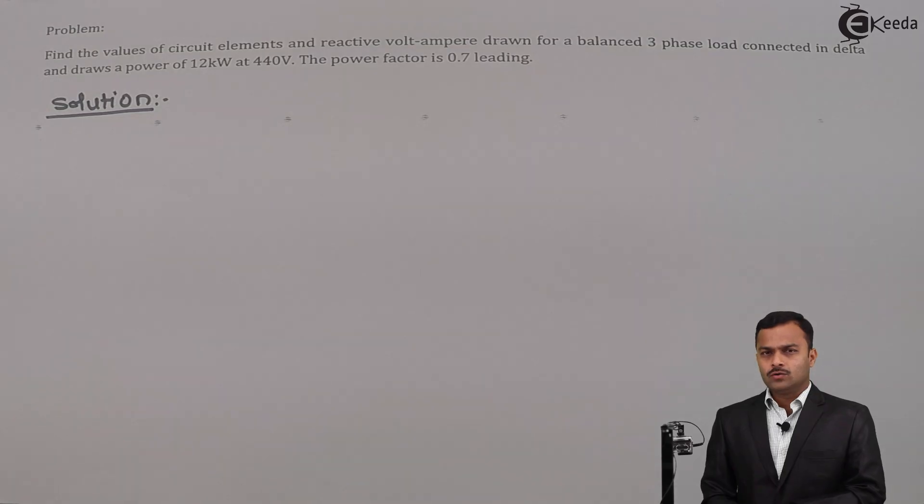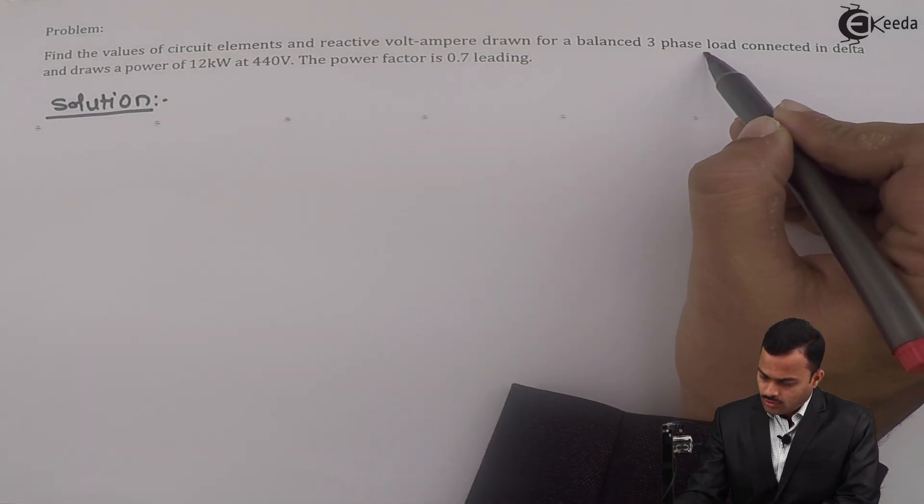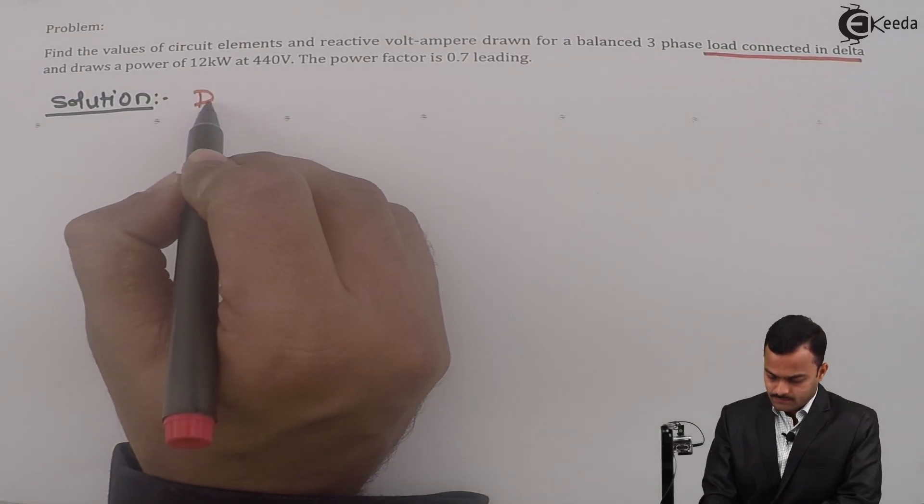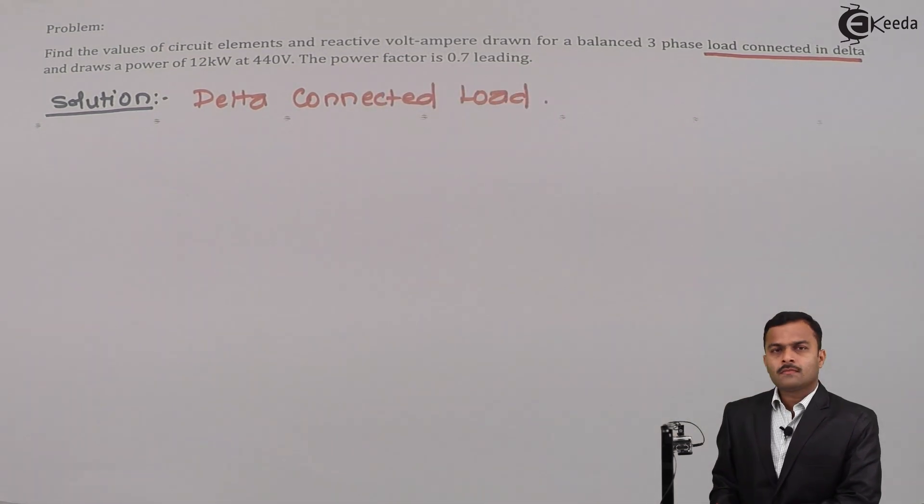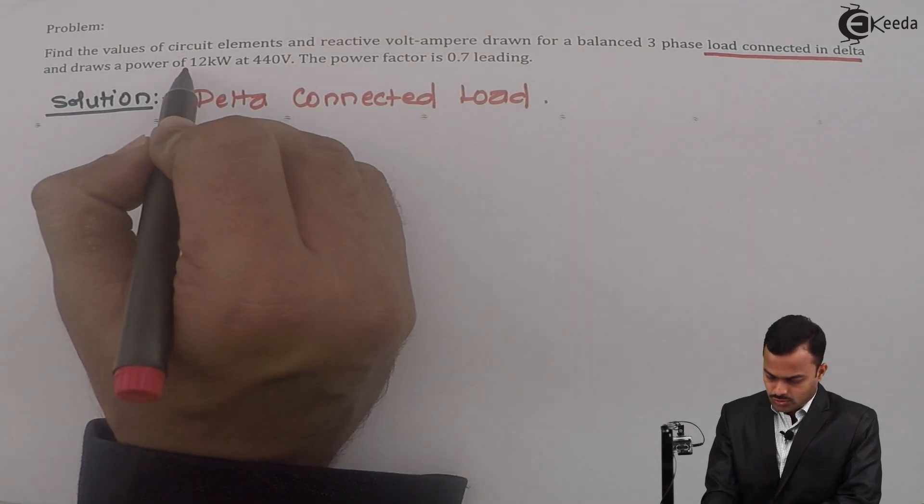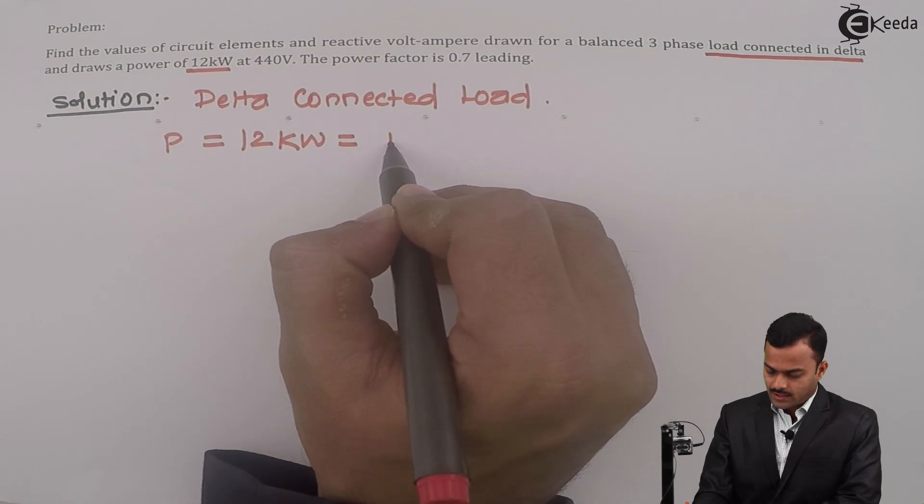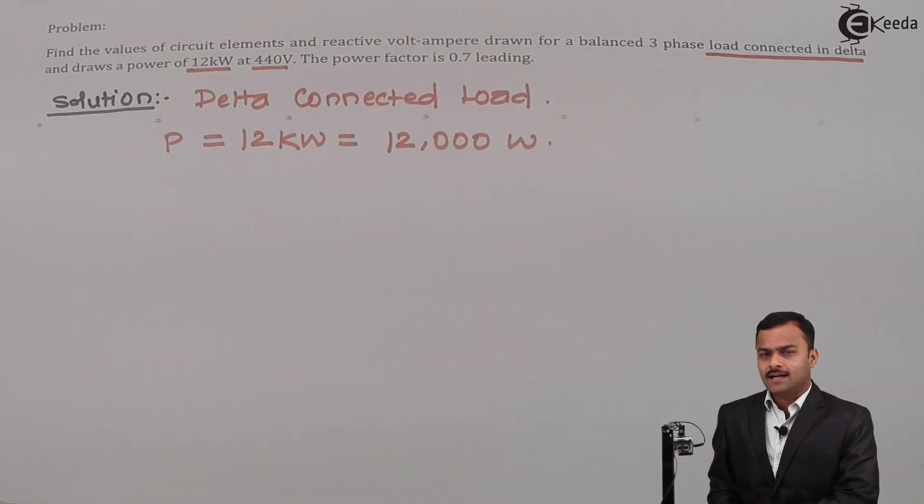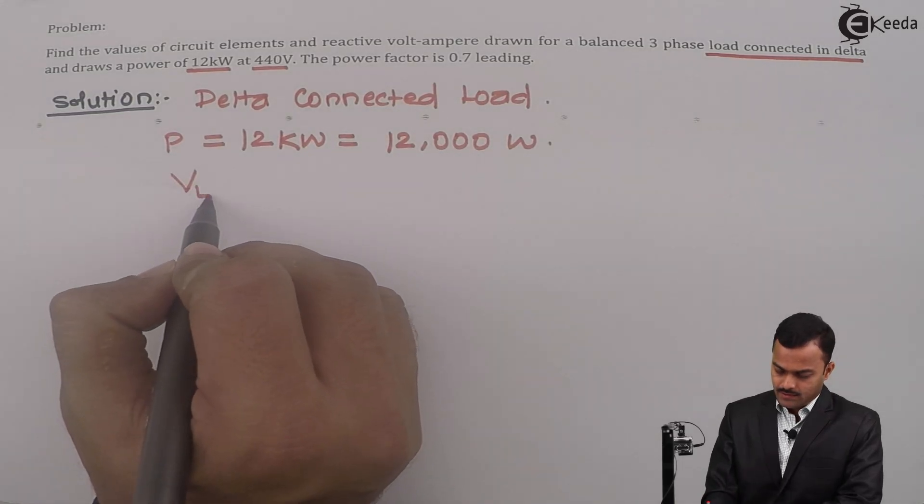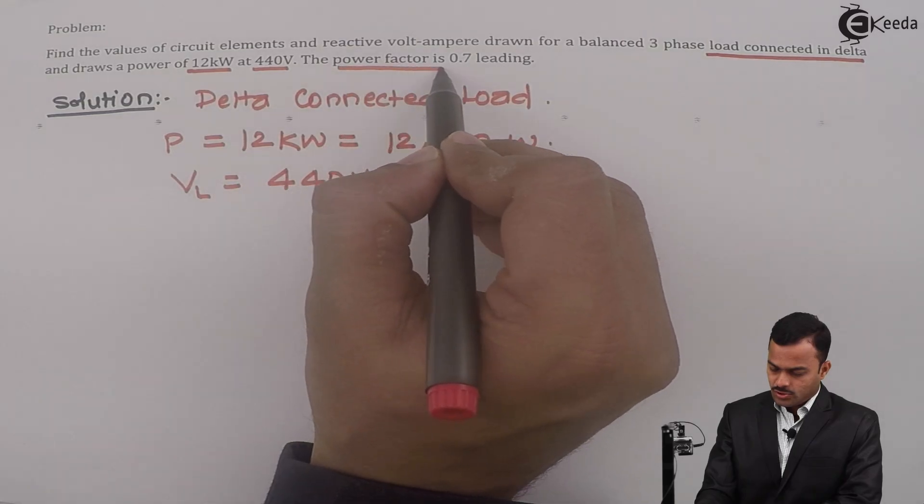First, let's list out the things given. They say the load is connected in Delta, so Delta connection is given. It draws a power of 12 kilowatt, so P equals 12 kilowatt, which is 12,000 watts. Voltage is given; the voltage given in a problem is always a line voltage, so line voltage VL equals 440 volts, and power factor is given as 0.7 leading.